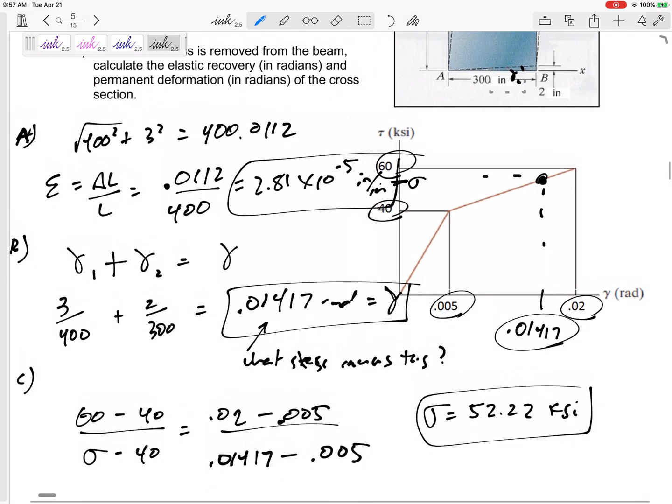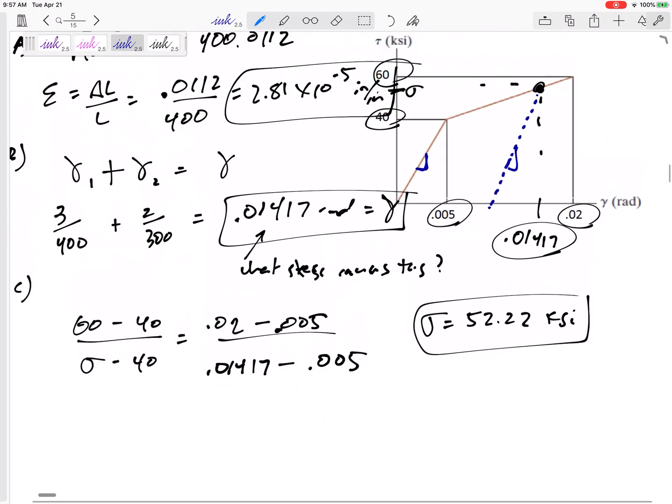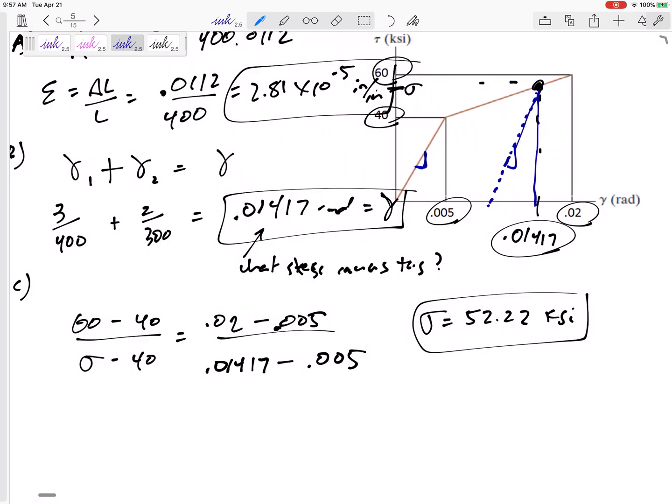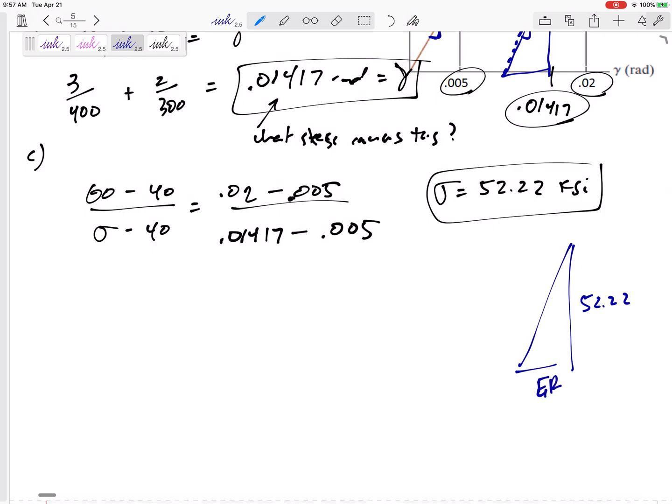Then, if the shear stress is removed from the beam, calculate the elastic recovery and permanent deformation of the cross section. So what happens when it is removed? It unloads at the same slope as the elastic region. And so I like to think of this as my unloading triangle right here. My unloading triangle right here has a height of 52.2. It has a base, this is the elastic recovery, elastic recovery. That's how much it bounces back from being stretched. The rest though is the permanent deformation, the permanent set.